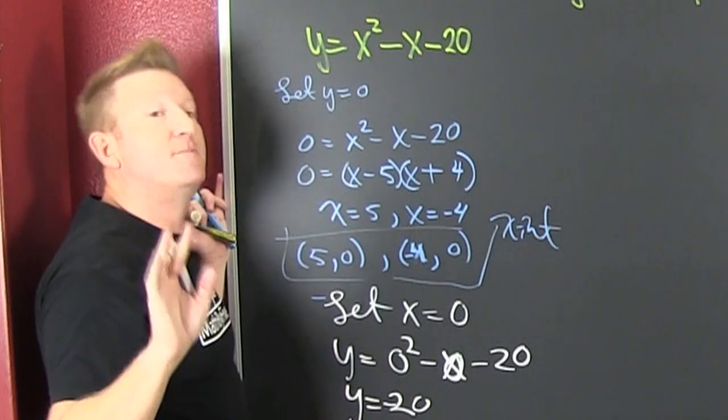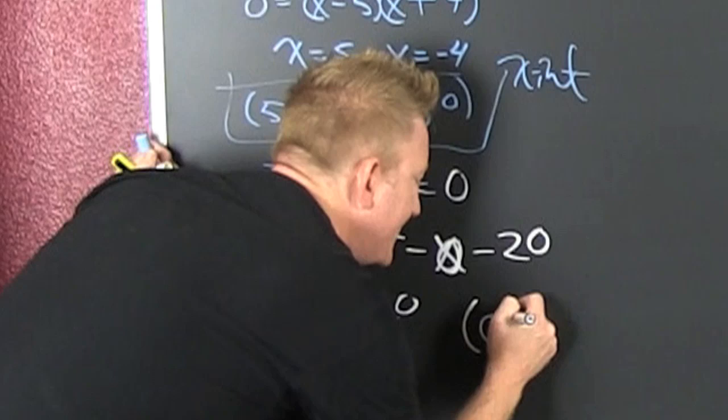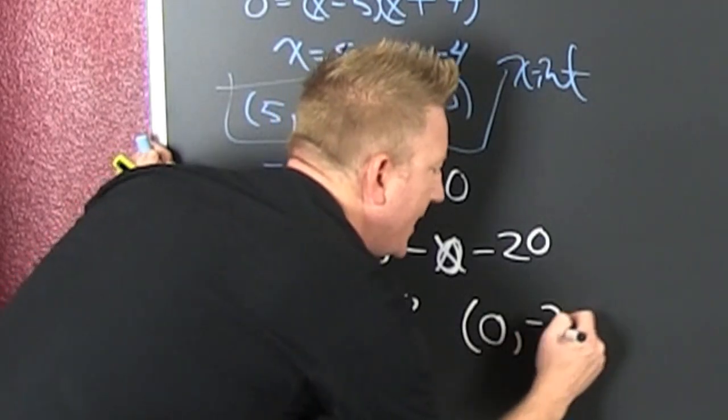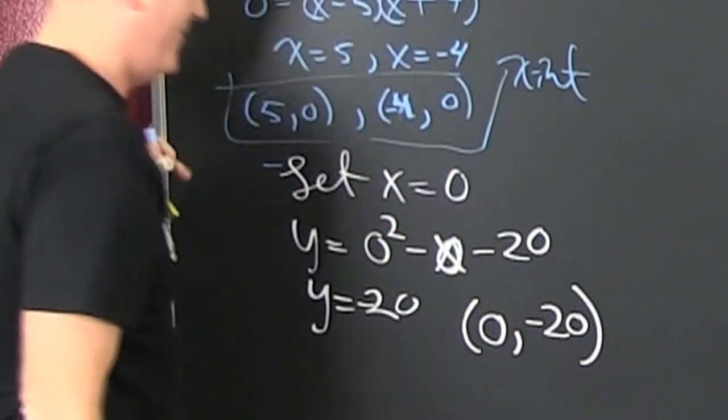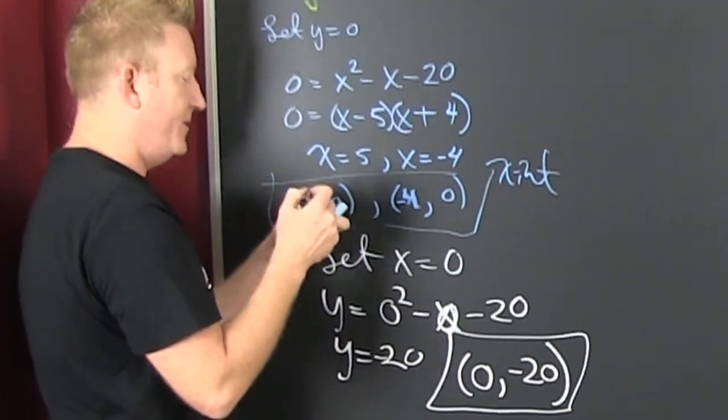So, what's my y-intercept? Did he just say Chris Brown? So, x is 0 and y is minus 20. Alright! So, we found the x and y-intercepts there.